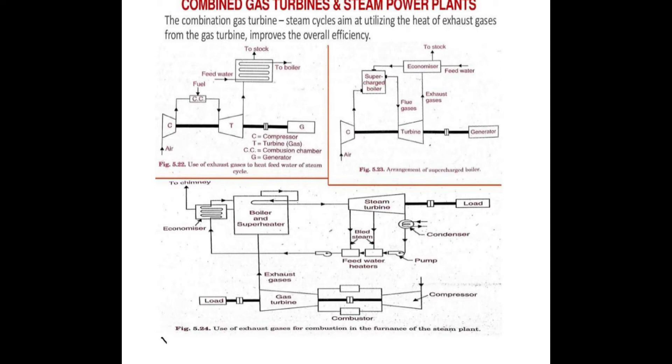The exhaust hot gases from the gas turbine are supplied to the boiler as input. With the help of these hot gases, the water in the boiler is heated. The water absorbs heat from the exhaust gases and is converted into vapour.